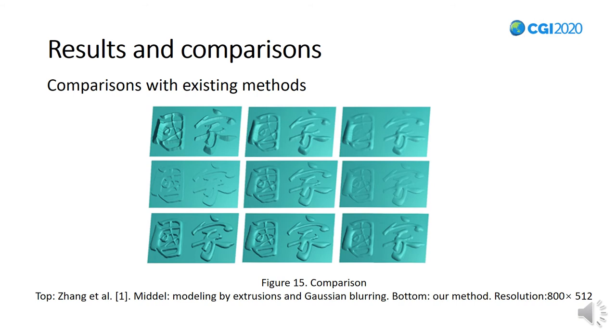To reduce the time, we have tried to directly extrude the font regions and only applied Gaussian blurring. As shown in the middle row of Figure 15, the height field varies from homogeneous height type to inhomogeneous height type.